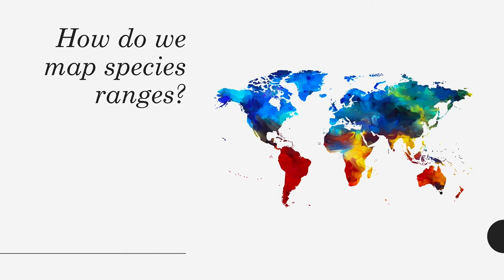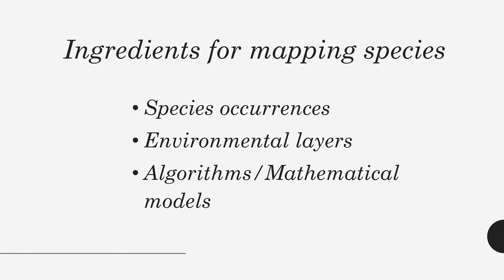I guess those are the ideas you have in mind, and you know you need to gather species occurrences, download environmental layers, and you are also worried about the algorithms and mathematical models you can use. With these three main ingredients for mapping species, I think occurrences is something you have thought about, and also the algorithms — but I am not sure how much you have really thought about environmental layers and what problems you are going to face gathering this kind of data.